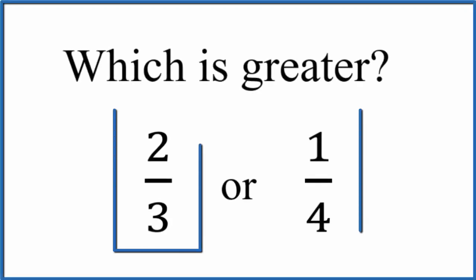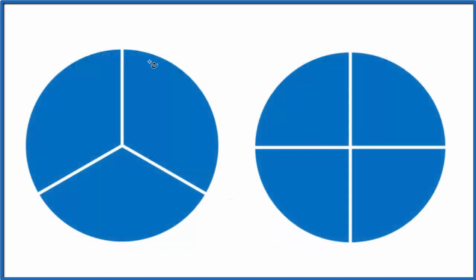Which is greater, two-thirds or one-fourth? We have two circles here. This one has one, two, three pieces, and this has one, two, three, four. So if we want to represent two-thirds, we could just fill in two of these.